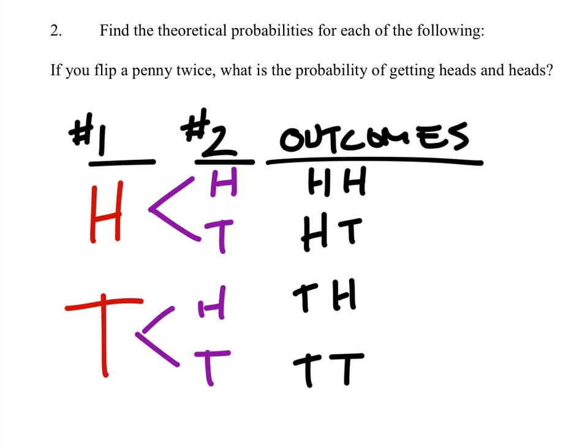And each of these should be equally likely, so the probability of heads and heads would be one-fourth. But if that is all you write on the test, you're going to get it wrong, so make sure you write all of them. This is the same as 0.25, which is 25%.